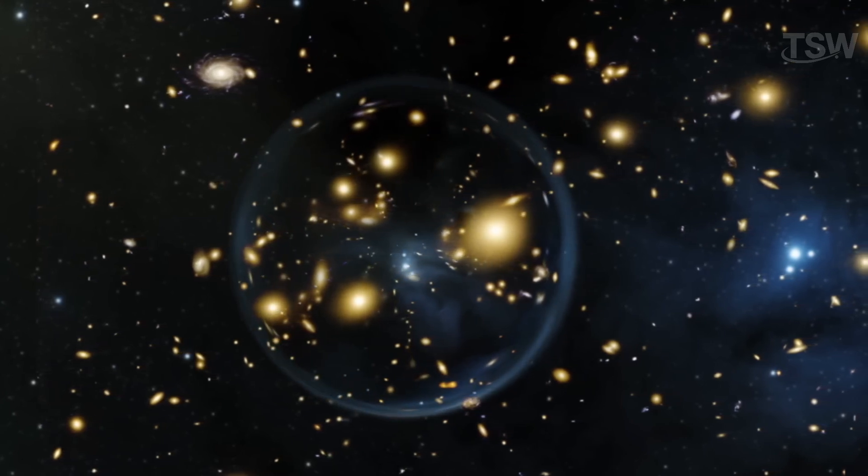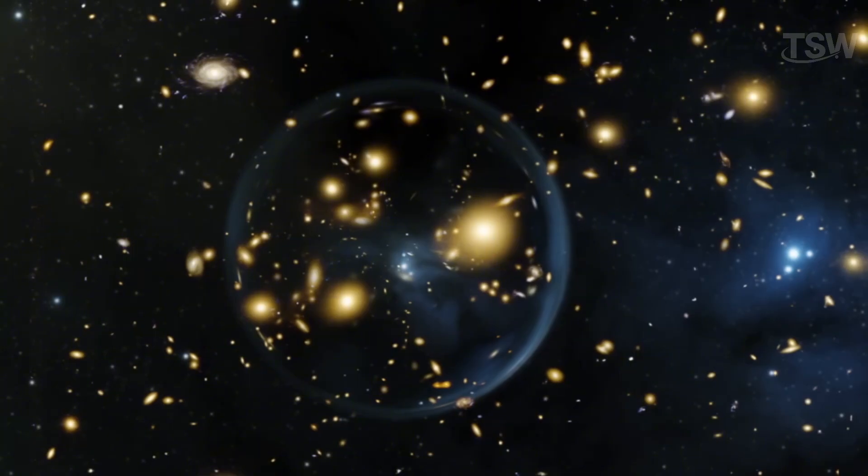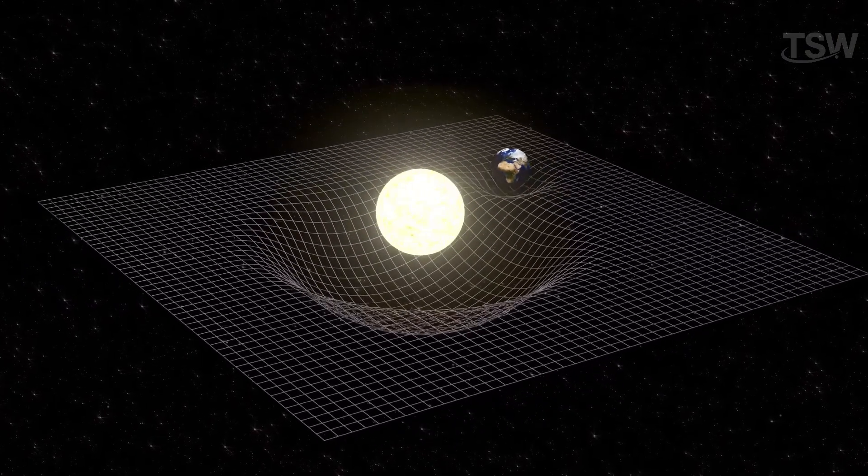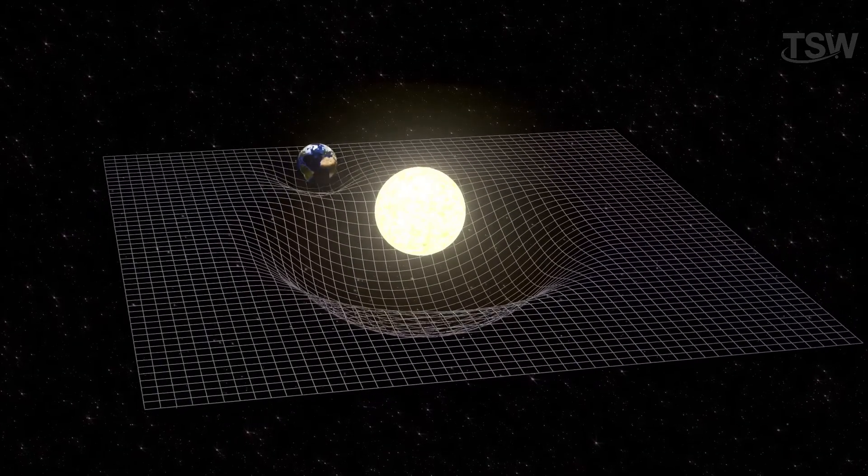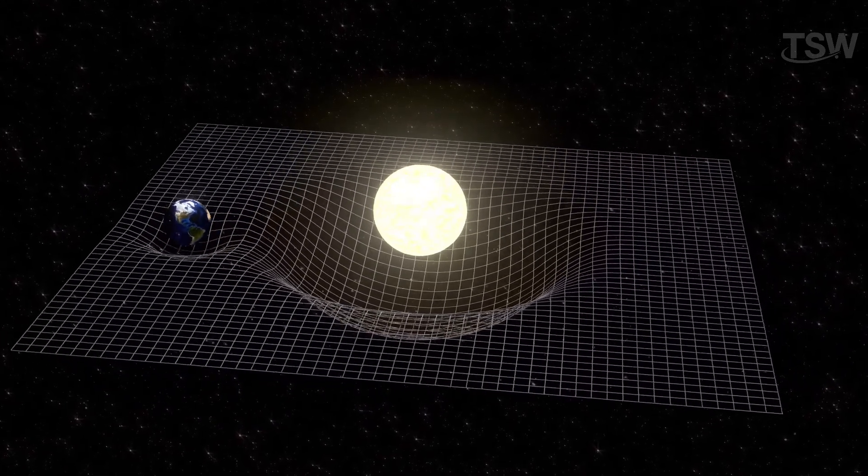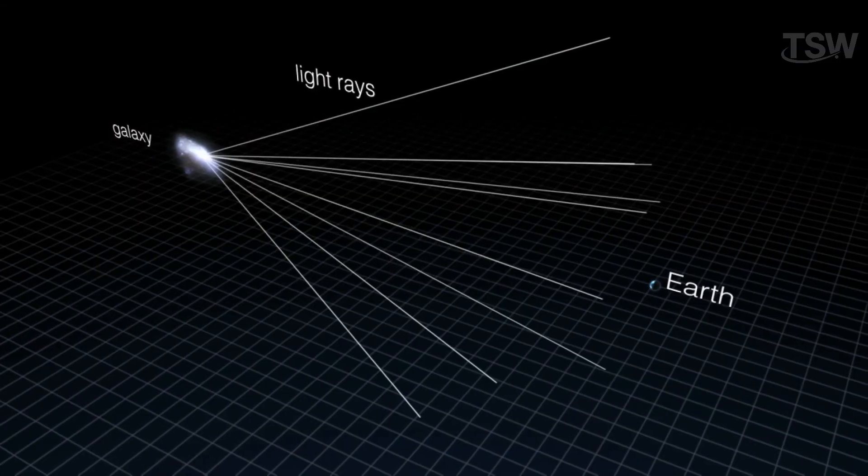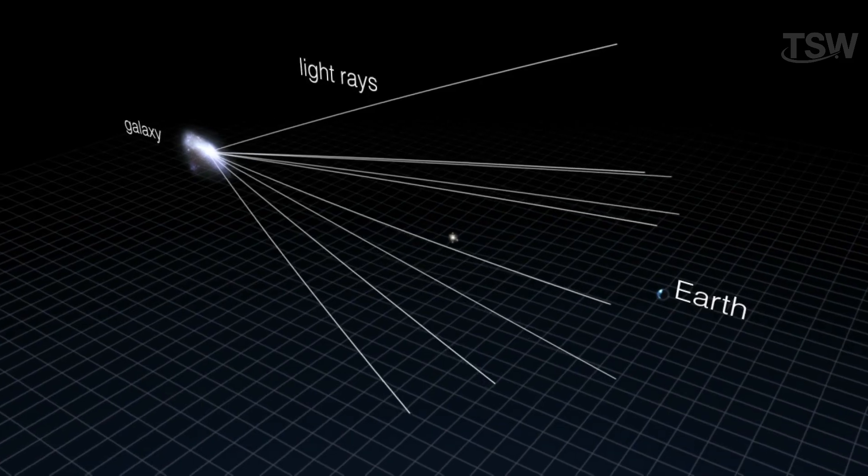What's most impressive about all of this is that these gravitational lenses aren't human inventions. They're created by nature itself, simply because space is shaped by the presence of mass. It's as if the universe builds its own observation tools, natural telescopes made of gravity, to help us see its farthest corners.